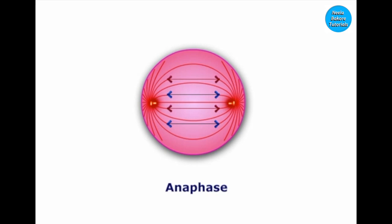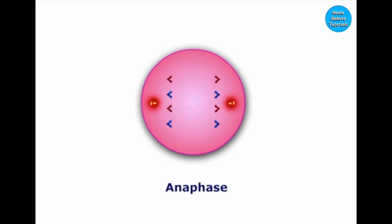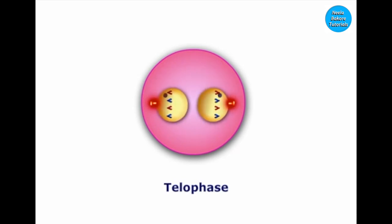Between the two separated chromosomes, interzonal spindle fibers appear. Towards late anaphase, the chromosomes reach the poles. During telophase, the nuclear membrane and nucleolus get organized and reappear, and the chromosomes become thin and are seen as chromatin fibers.